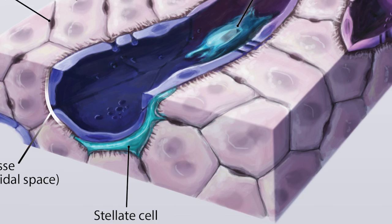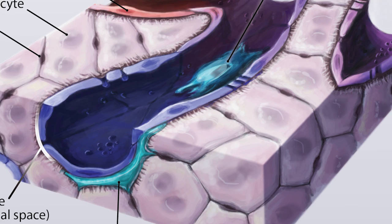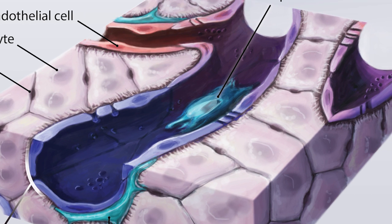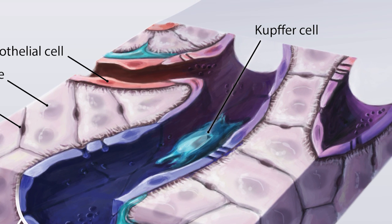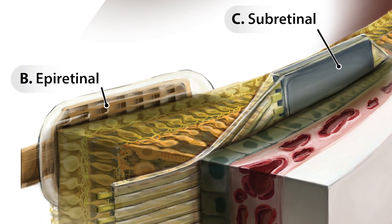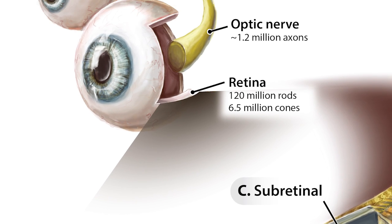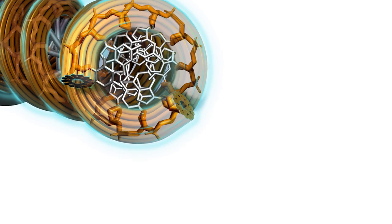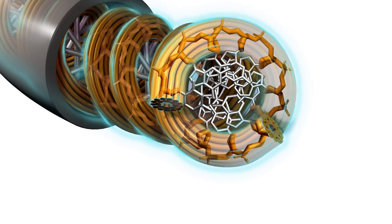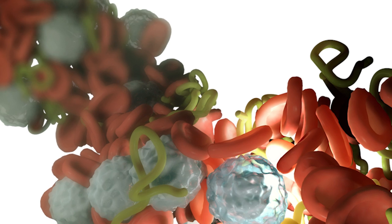For things that have a lot more shading and organic form to them, I like to paint it in Photoshop, and for more realistic things, Cinema 4D is great for anything 3D.